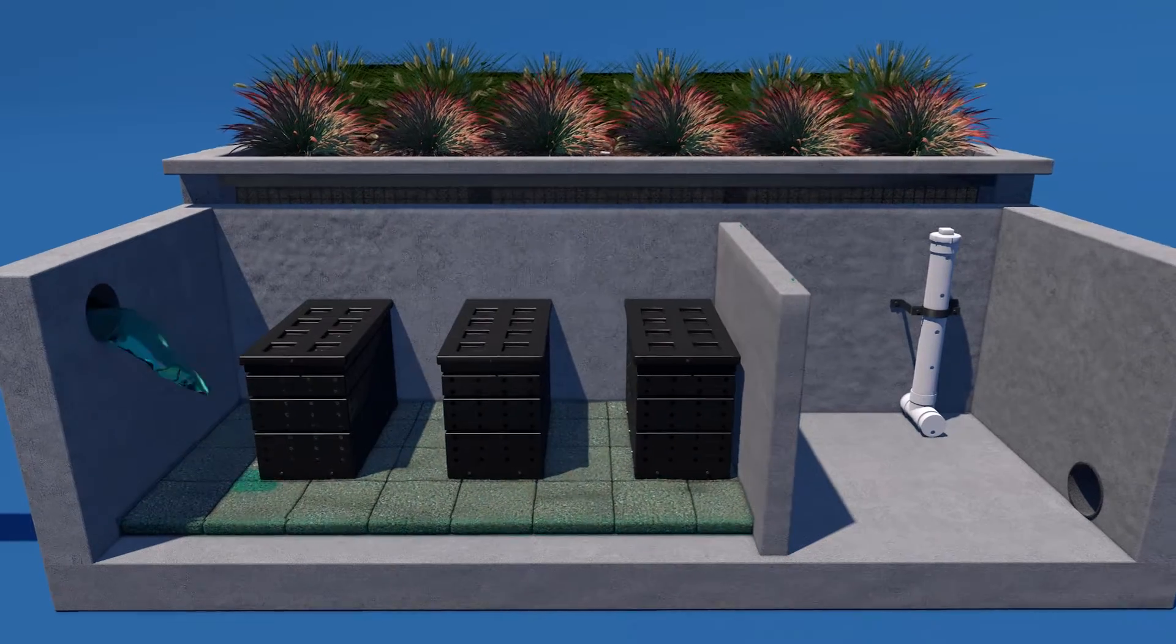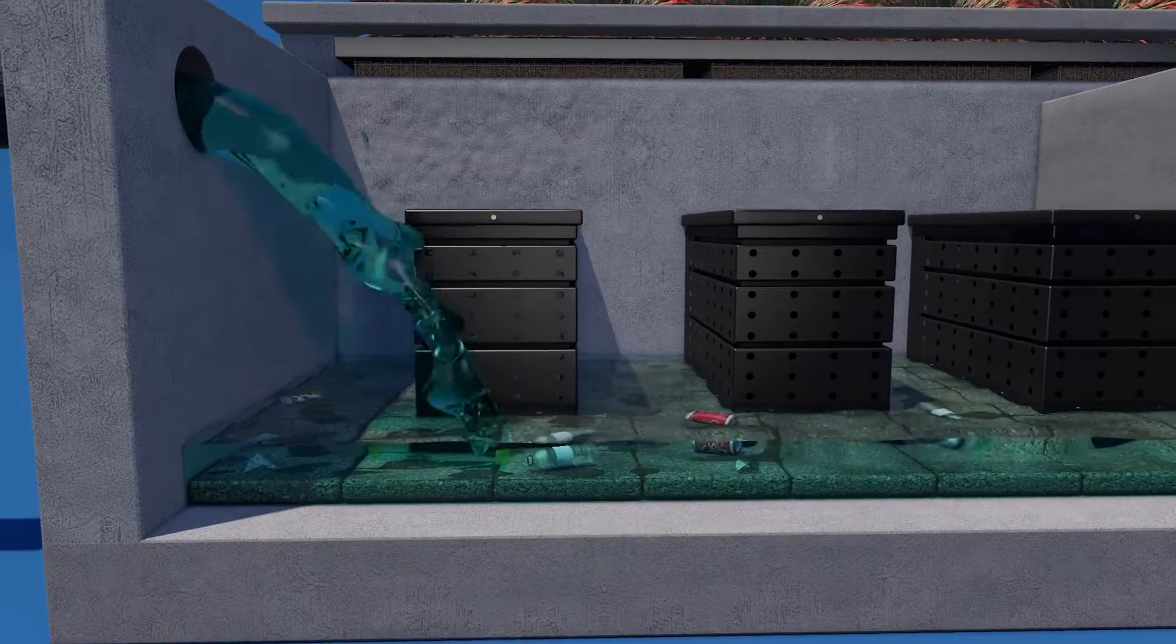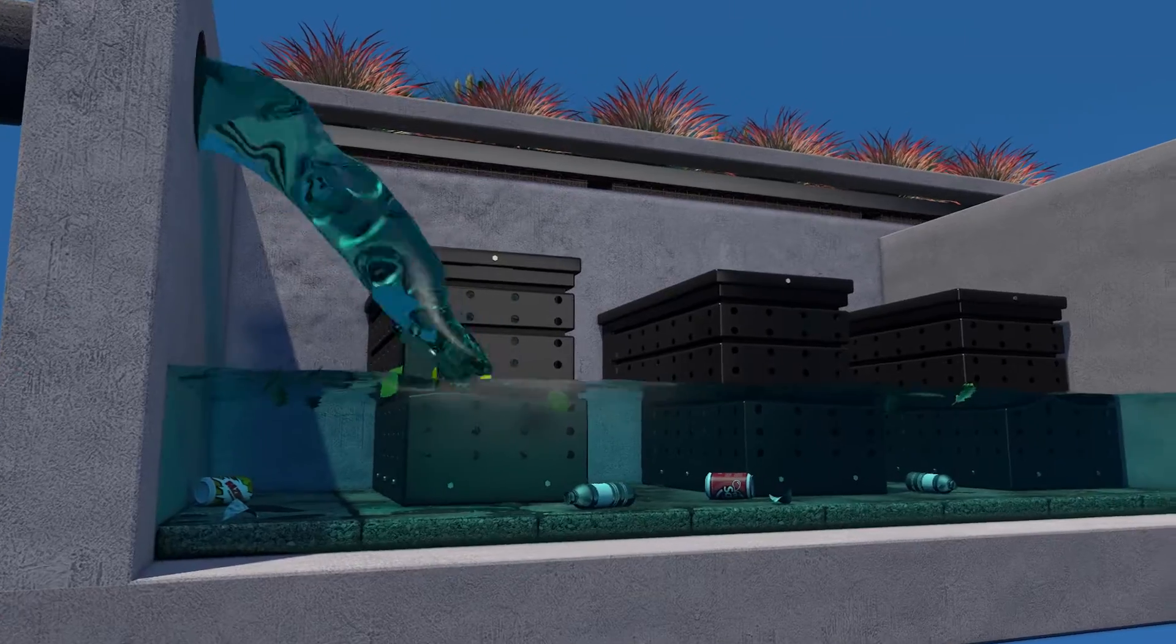Treatment begins as stormwater enters the modular wetlands linear pre-treatment chamber where total suspended solids, trash, and debris settle and are contained within the chamber.